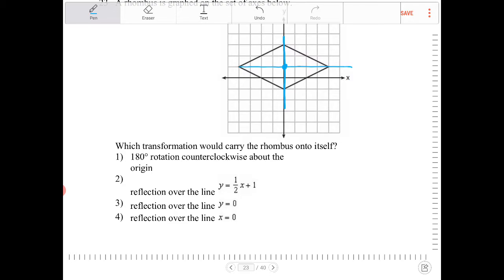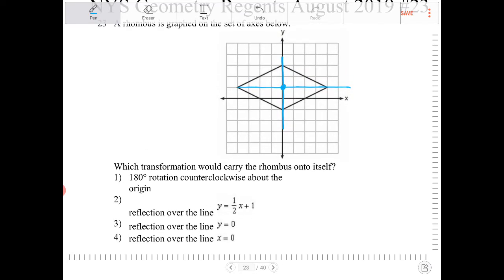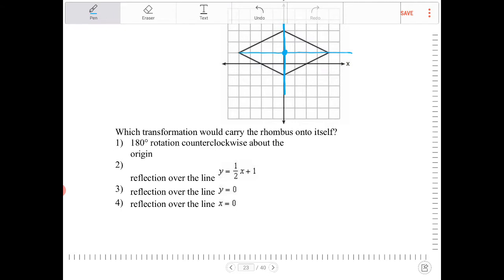Which transformation would carry the rhombus over to itself? Option 1: 180 degree rotation counterclockwise about the origin. No, that would not be true because if we were to do that, then the rhombus would not land on itself there.